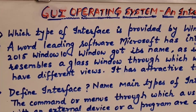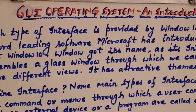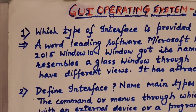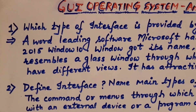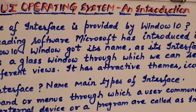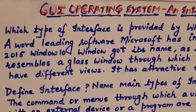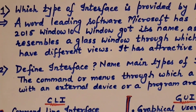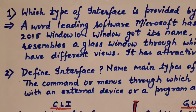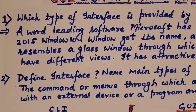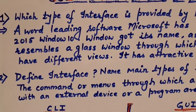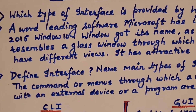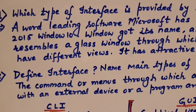GUI means Graphical User Interface, which I have already discussed in my previous videos. Now we reach the second question: define interface and name the main types of interfaces. Interface, as I already taught in my previous video, is a link between the user, hardware, and software. By this link, we communicate and work on the Windows 10 screen. Not only Windows 10 — all Windows versions work with the interface, and their interface is only GUI.